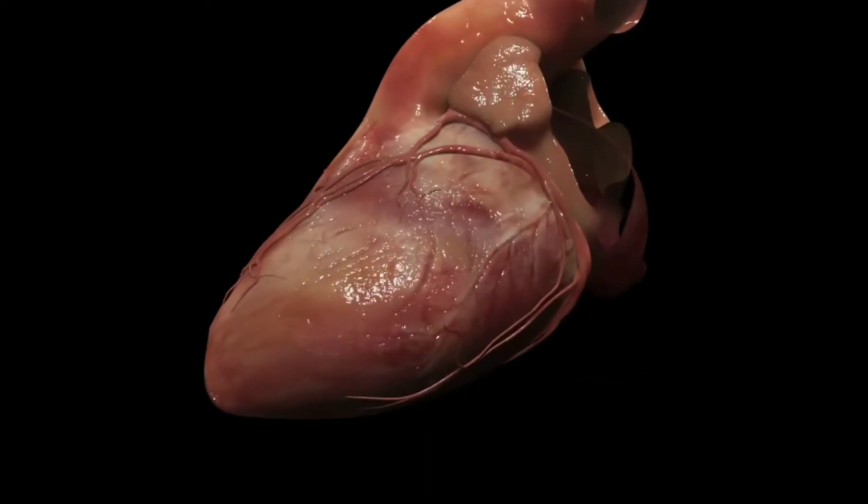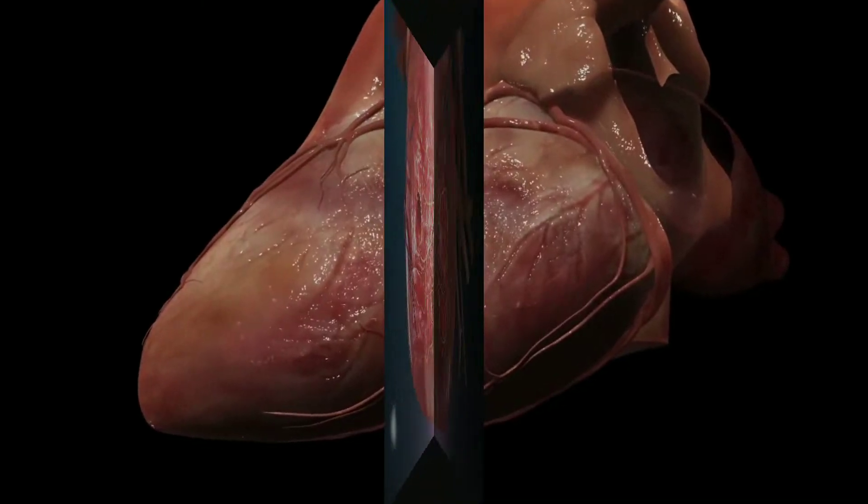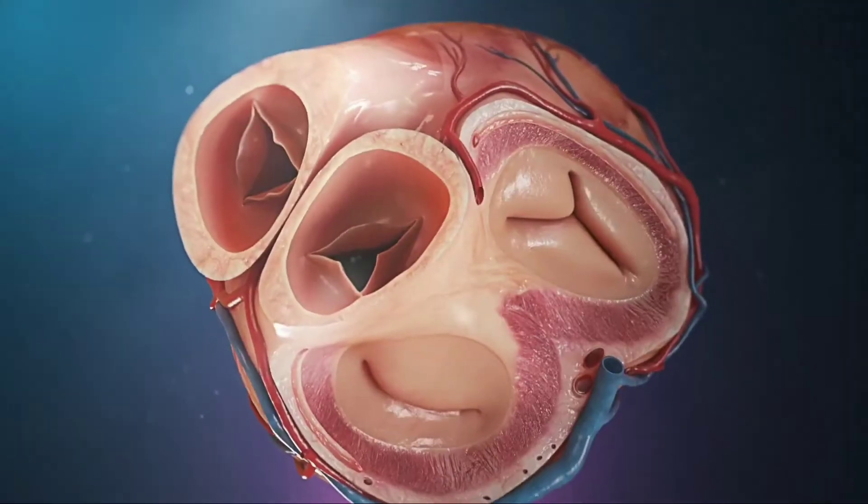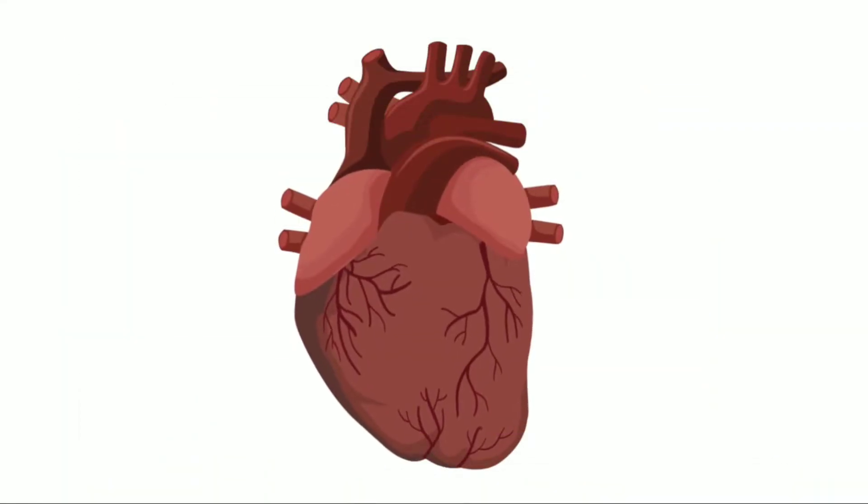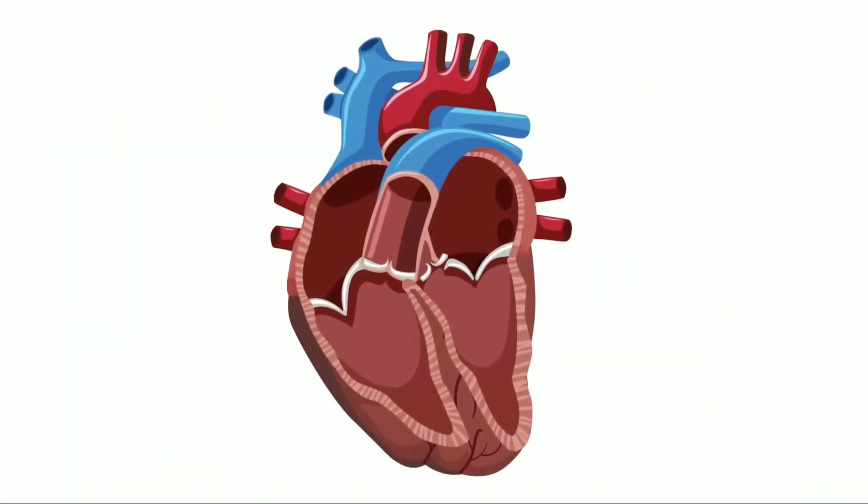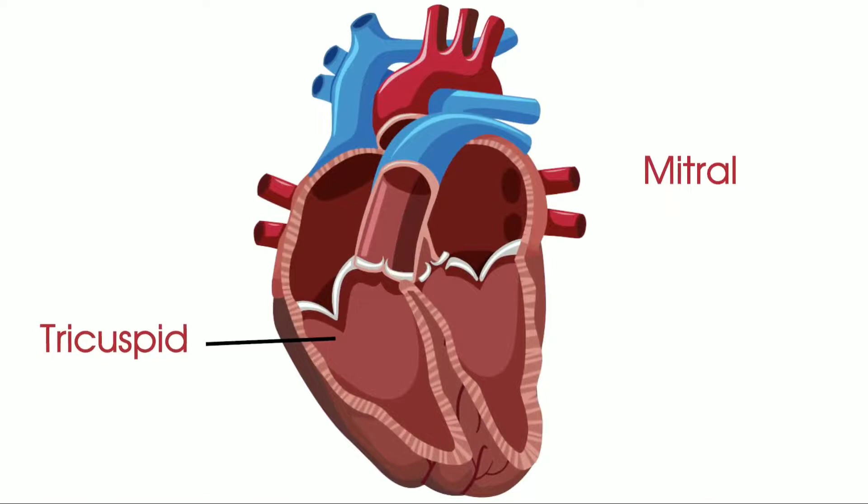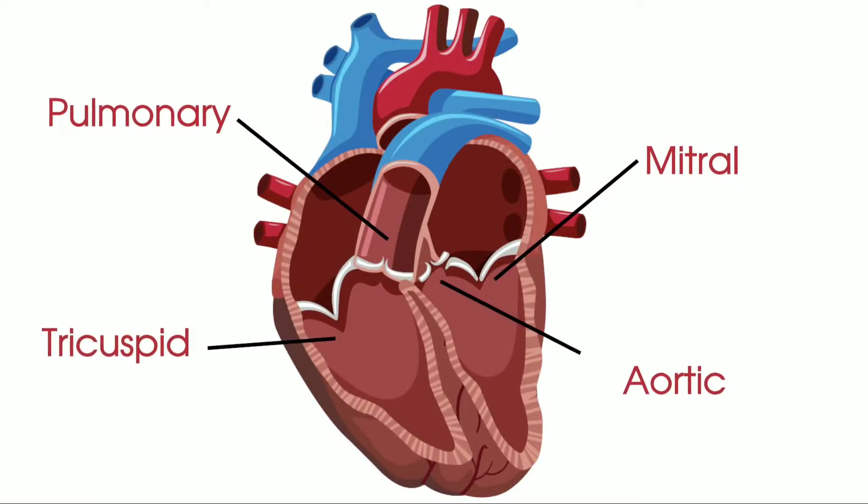The apex lies just to the left of the sternum in the fifth intercostal space. The valves act as one-way passages of blood and prevent backward flow. Four valves keep blood flowing in the right direction: tricuspid, mitral, pulmonary, and aortic.